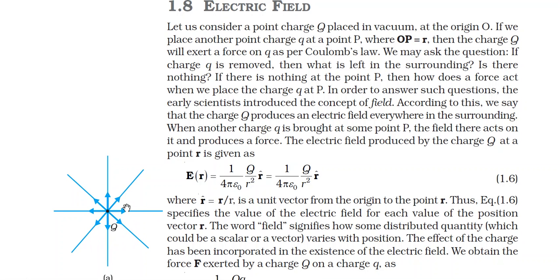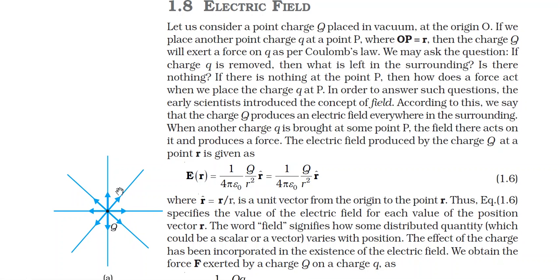If a charge Q is brought to a point, that Q charge will exert a force there. The region of influence of this Q charge is what we call the electric field. We call it the electric field because the force is an electric force — just as when there is a gravitational force we call it a gravitational field. So qualitatively, the electric field is the three-dimensional region of influence surrounding a charge. Quantitatively, it tells us how strong that field is at any distance — 1 meter, 2 meters, 1 centimeter, 1 millimeter, or 1 micrometer from Q.